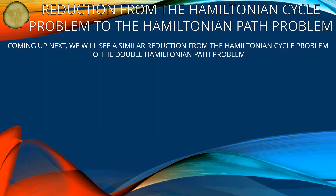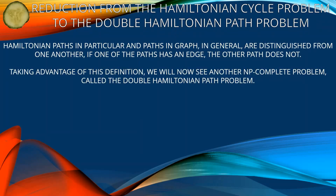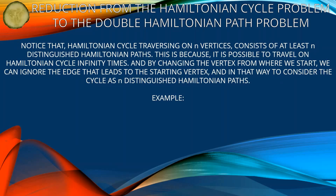Coming up next, we will see a similar reduction from the Hamiltonian cycle problem to the double Hamiltonian path problem. Hamiltonian paths are distinguished from one another if one path has an edge the other does not. Using this definition, we will now see another NP-complete problem called the double Hamiltonian path problem.